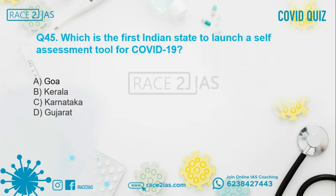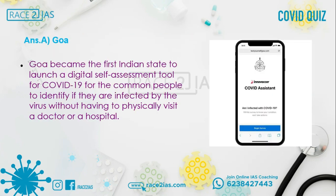Question number 45: Which is the first Indian state to launch a self-assessment tool for COVID-19? Option A: Goa. Option B: Kerala. Option C: Karnataka. Option D: Gujarat. The right answer is Option A, Goa. Goa became the first Indian state to launch a digital self-assessment tool for COVID-19, for common people to identify if they are infected by the virus without having to physically visit a doctor or hospital.